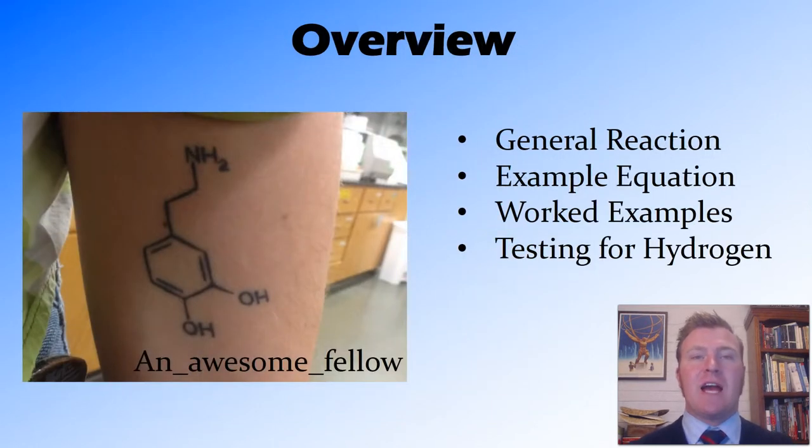In this video, we've looked at the general reaction between an acid and a metal and found that acid and metal reacts to form a salt and hydrogen, remembering that salt can be any ionic compound. We've had a look at a couple of example equations and worked through some examples together, remembering that the salt comes from the metal and the anion of the acid. And we also described the pop test as a way to test for hydrogen gas. Thanks for watching, guys. Peace out.